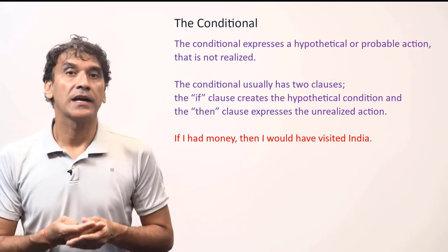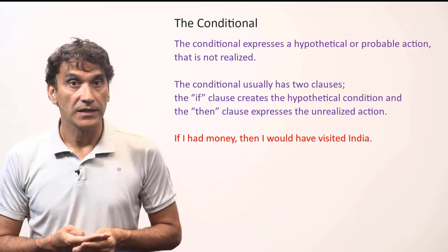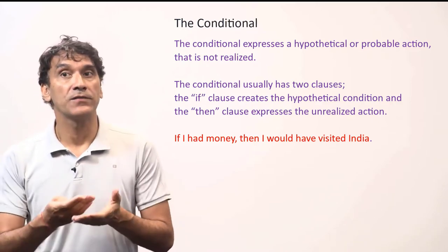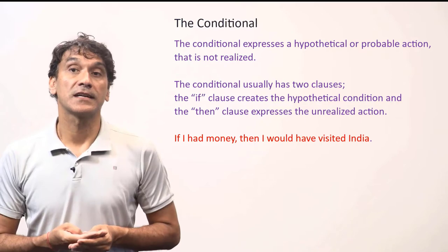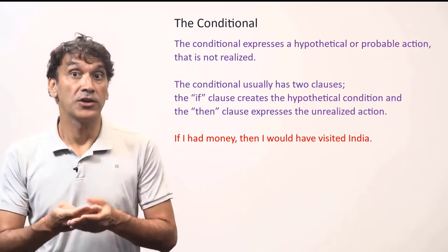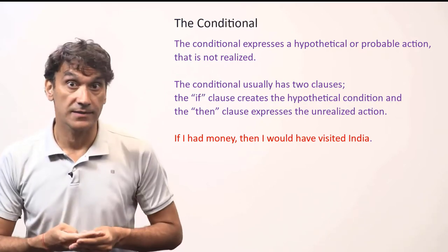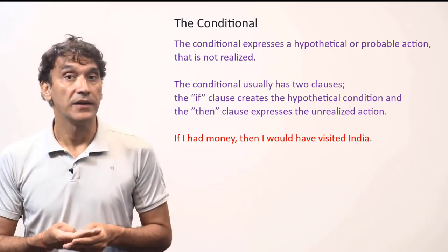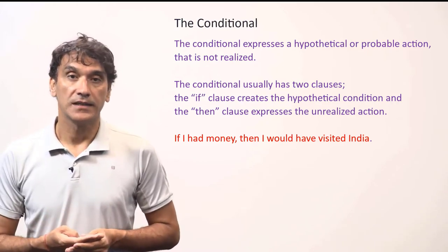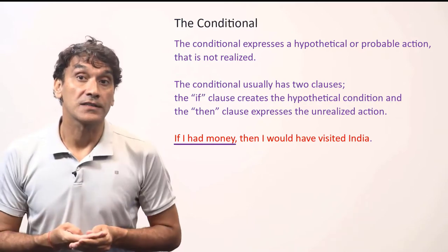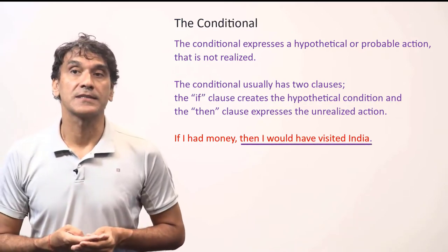Here is an example: if I had money, I would have visited India. So I did not have money and I did not visit India. The condition that was not met is I did not have money, and the action that was not realized is I did not go to India. The if clause creates the condition and the then clause expresses the action that did not happen.